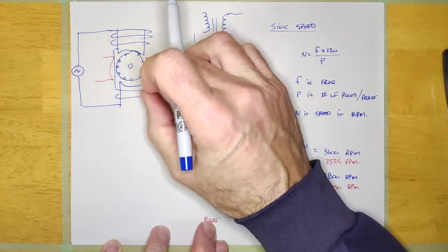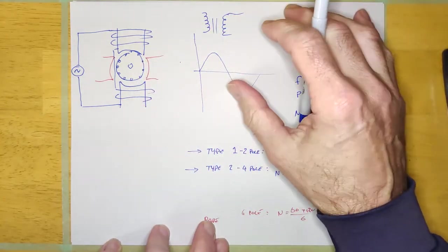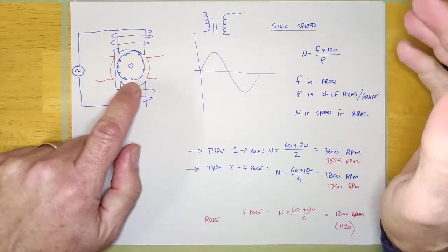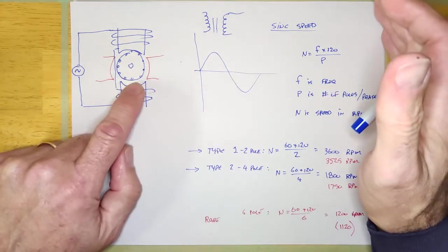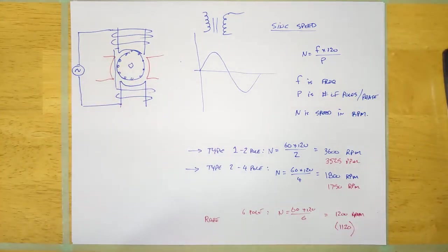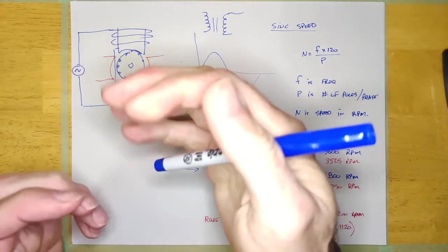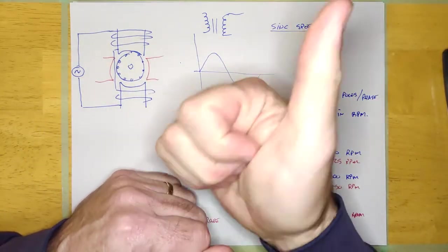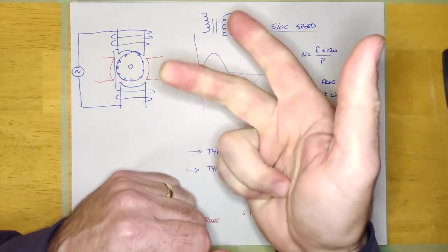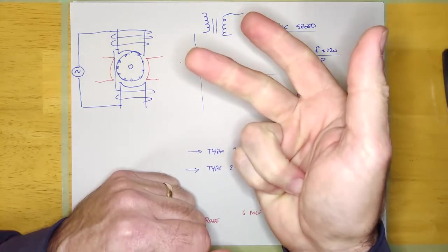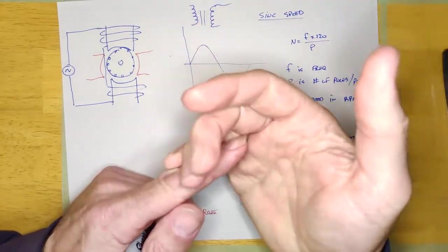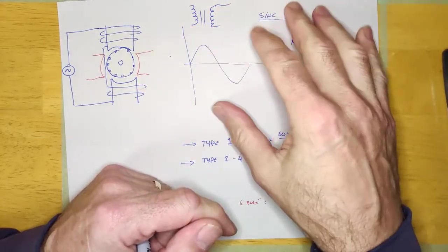And so under no load, this thing might draw 2 amps, and under full load it might draw 10 amps. Now the question is, how far can I load an AC motor up? Well, if you look at the nameplate for any AC motor, it's going to give you a bunch of information. It's going to give you the horsepower, it's going to give you the voltage, it's going to have the FLA, which is the full load amps, and then it's going to give you the RPM.